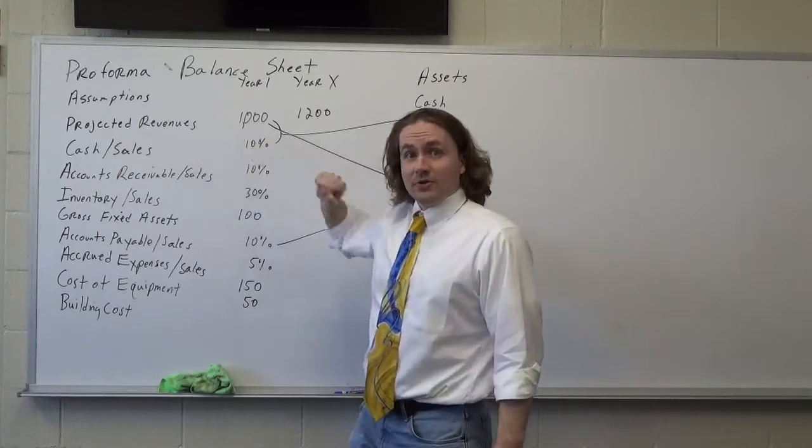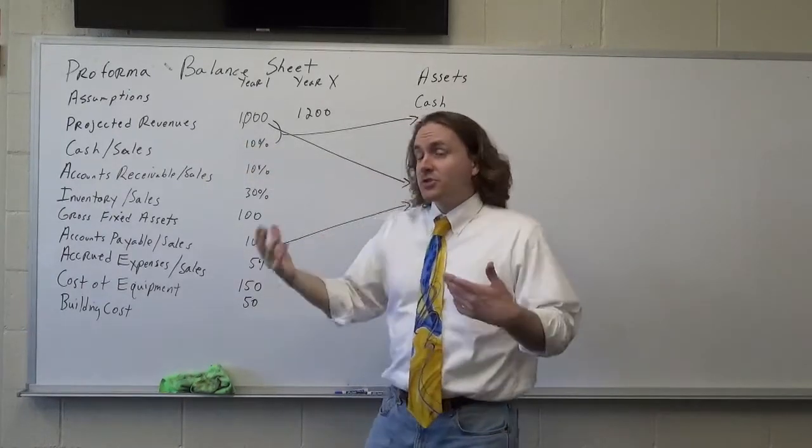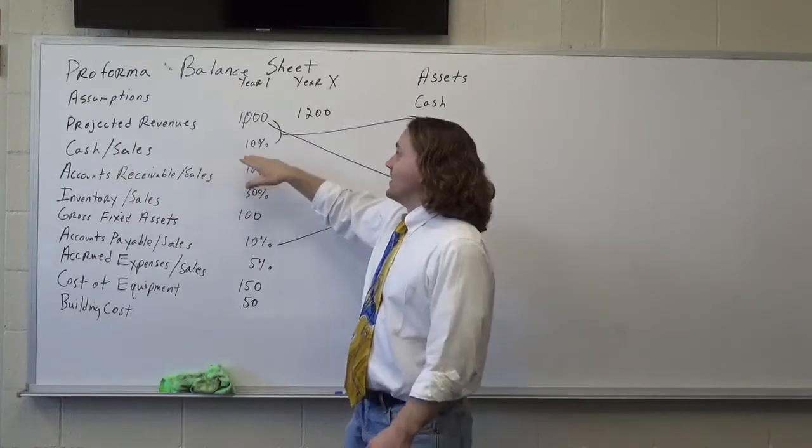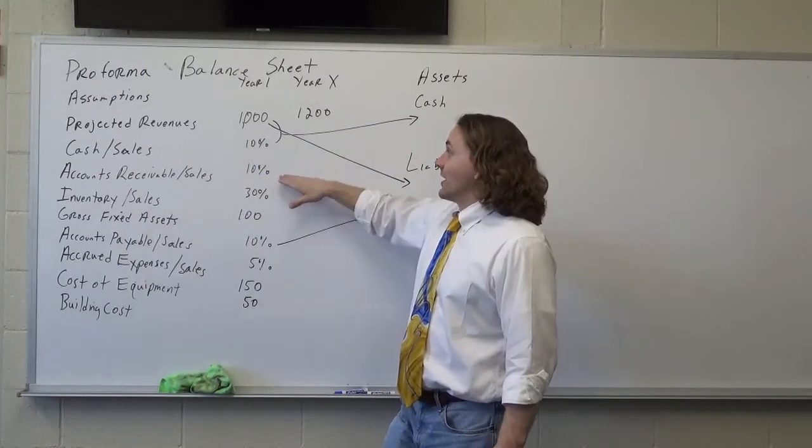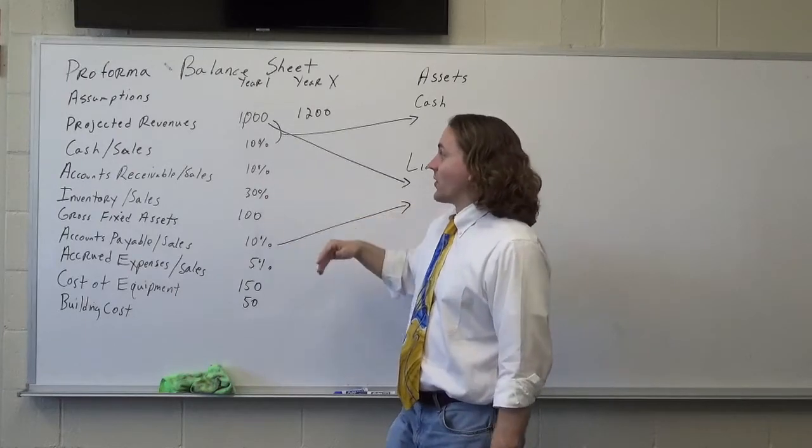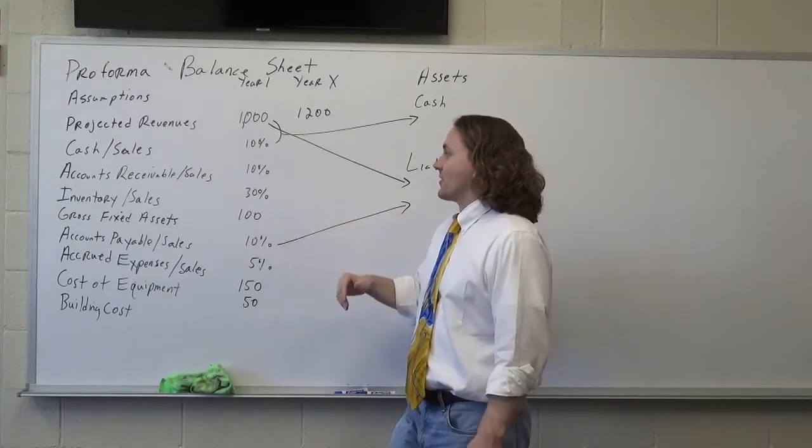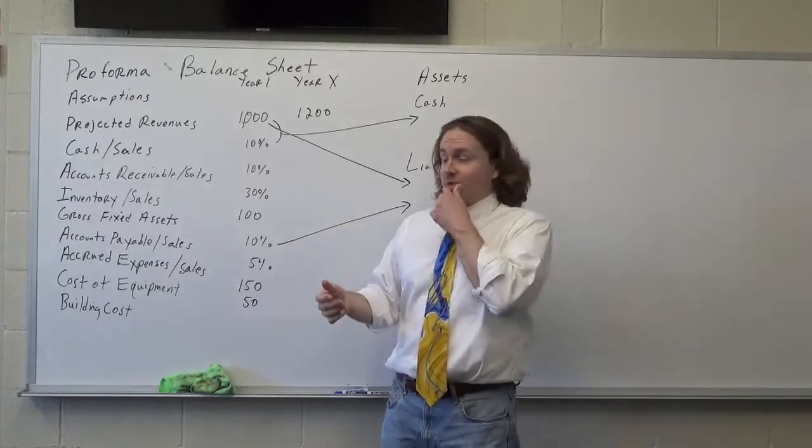Projected revenues - that's an obvious one. Based on industry trends, you think that about 10% of your sales are going to result in cash. Accounts receivable, 10%. Inventory for sales. Gross fixed assets might cost $100, as opposed to a percentage.